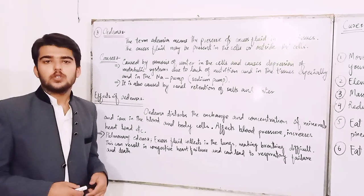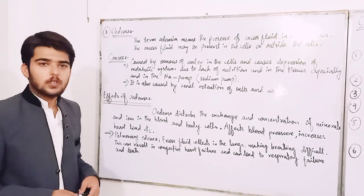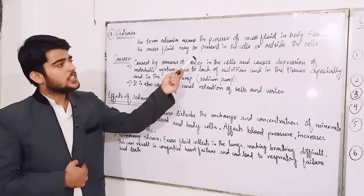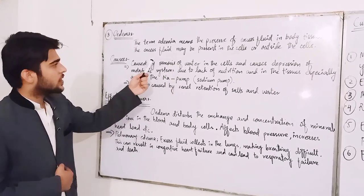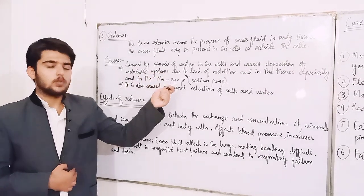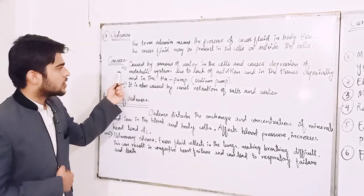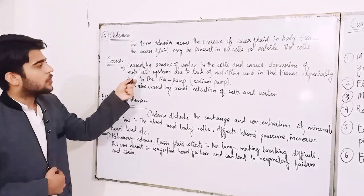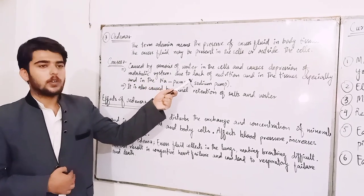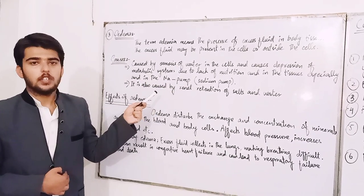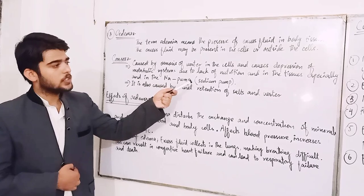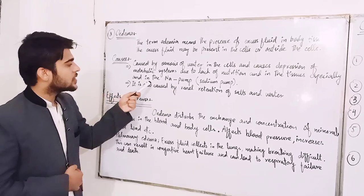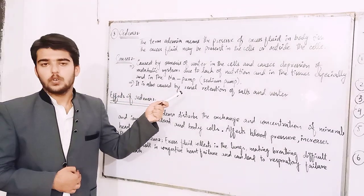The third type of disease or disorder of blood is oedema. The term oedema means the presence of excess fluid in the body tissues. The excess fluid may be present in the cells or outside the cells. It is caused by osmosis of water in cells and causes depression of metabolic systems due to lack of nutrition in the tissues, especially in the sodium pump.